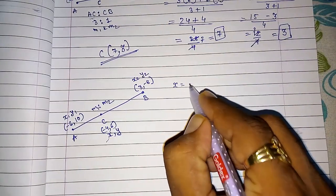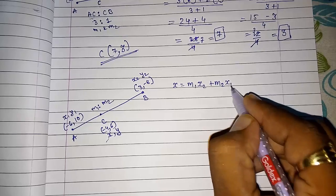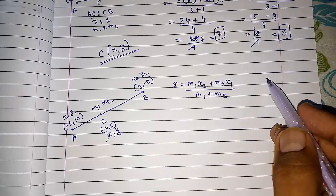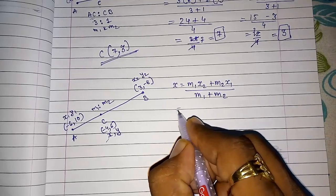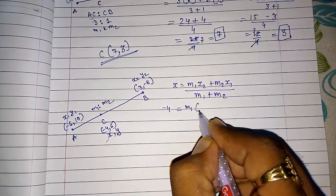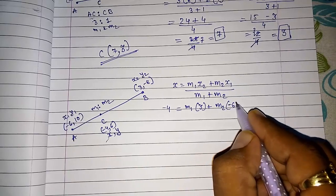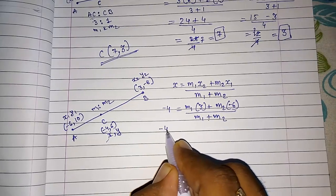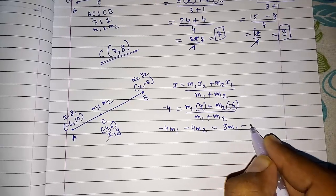Now again the same formula. X is equal to M1 X2 plus M2 X1 by M1 plus M2. From one part only you will get the ratio. No need of doing the second one, but if you want to check then you can solve the second part also. I am going to solve by both. Now X, X was minus 4. M1 X2 that is 3 plus M2 X1 that is minus 6 by M1 plus M2.